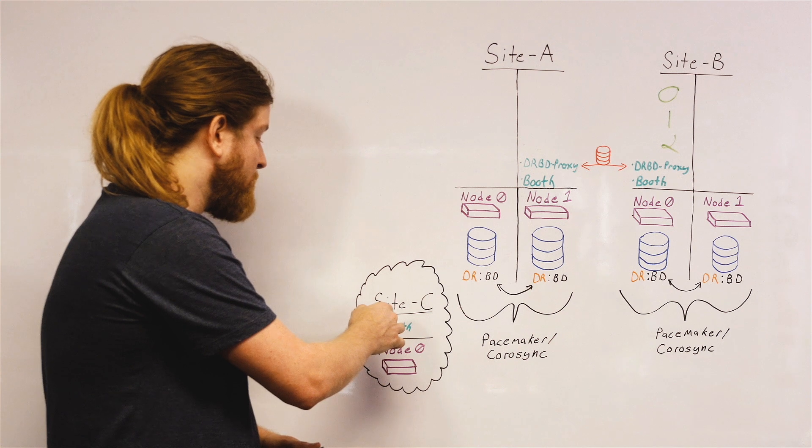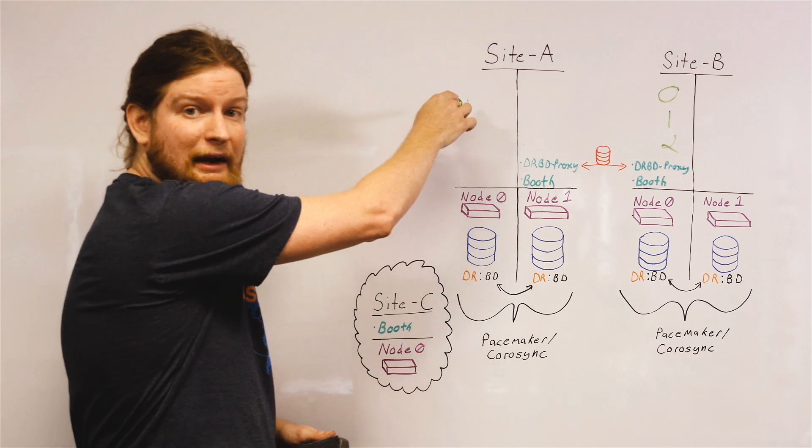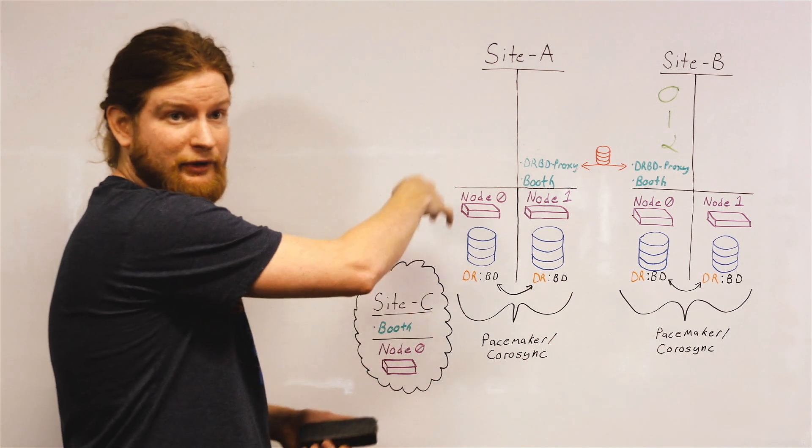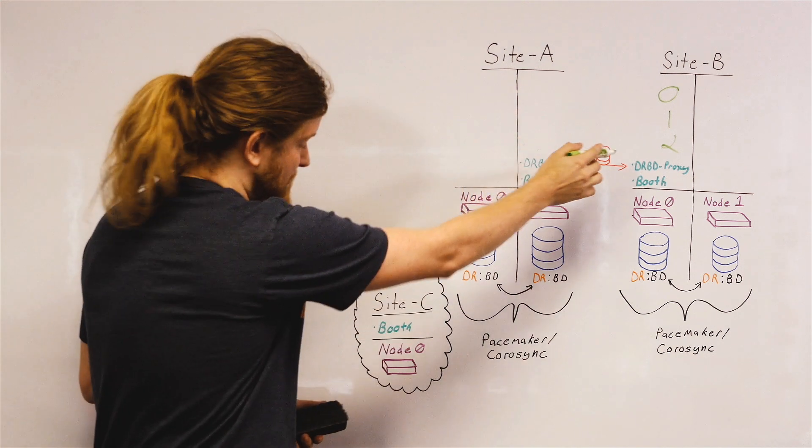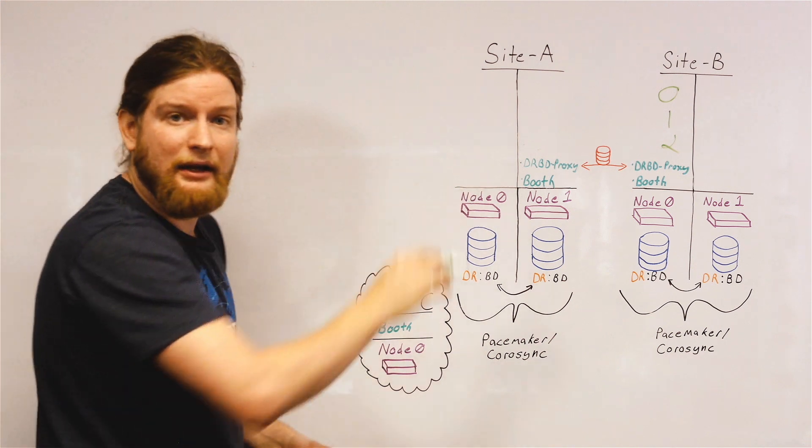So if Booth is able to see that site A is down, or that is, it's able to not see site A and can see site B. Site B can see site C and site B can't see site A.